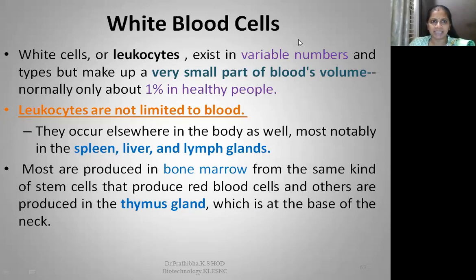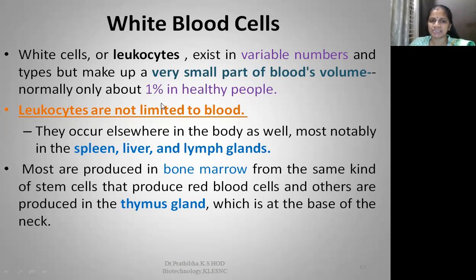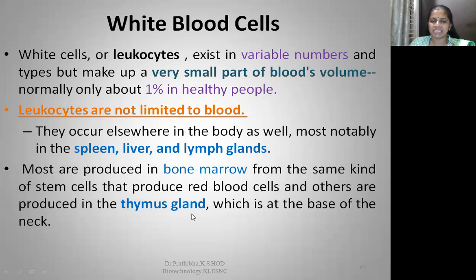White blood cells, or leukocytes, exist in variable numbers and types but make up only about one percent of blood's volume in healthy people. When the body gets infected, WBC count increases as they act as the defense mechanism. Leukocytes are not limited to blood — they occur notably in the spleen, liver, and lymph glands. Most are produced in bone marrow from stem cells that also produce red blood cells, while others are produced in the thymus gland at the base of the neck.